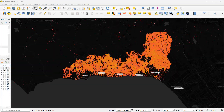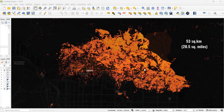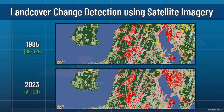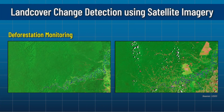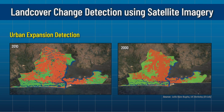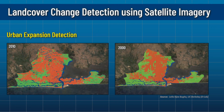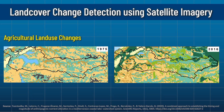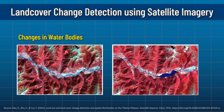To give you some straightforward examples, these sorts of change detection analyses are quite common in deforestation monitoring, urban expansion detection studies, monitoring agricultural land use changes, and in things like coastal erosion studies, and so much more.